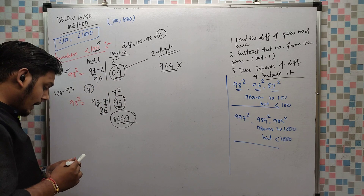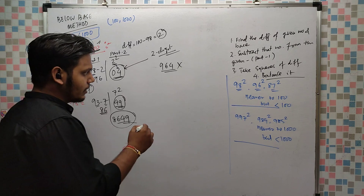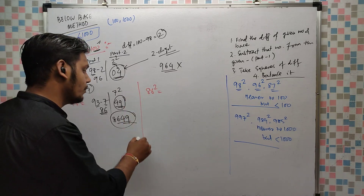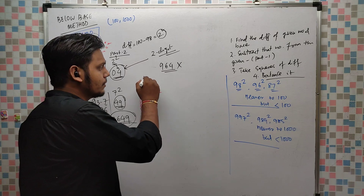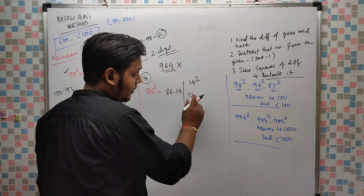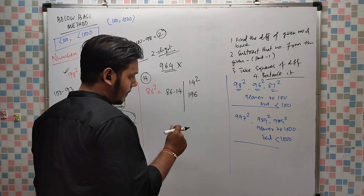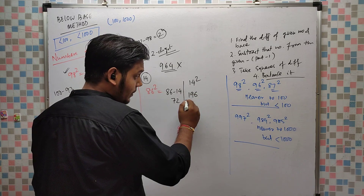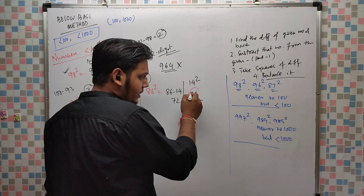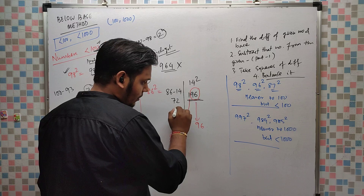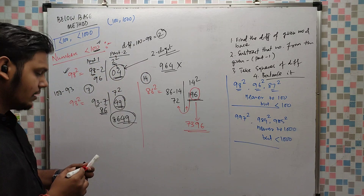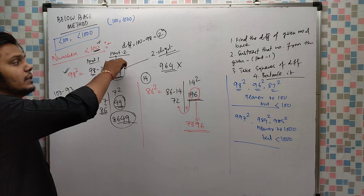Now if a 3-digit number is coming in part 2 — suppose 86². How much less than 100 is 86? It is 14 less. So 86 minus 14, and 14² is 196 — that's a 3-digit number. We want only 2 digits here, so take the last 2 digits: 96. The remaining 1 is added to the previous part: 72 plus 1 is 73. The answer is 7396.